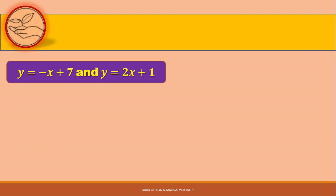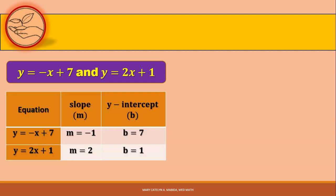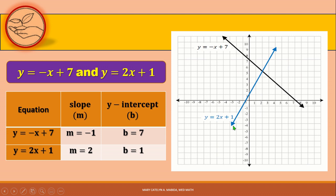For example number 1, both equations are in slope-intercept form. We can create a table to organize the slopes and y-intercepts. For y = -x + 7, the slope is -1 and y-intercept is 7. For y = 2x + 1, the slope is 2 and y-intercept is 1. After plotting and graphing, we can see that our graphs intersect at (2, 5). That is the solution to the system.